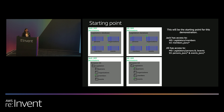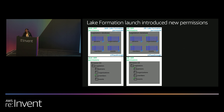The scenario we have here involves two personas: Jack developer and Jill developer. Both have access to the catalog. Jack has access to a table called members, whereas Jill has access to two tables called persons and events. This is the existing environment we're starting from, and from here we will introduce Lake Formation's new permission model.